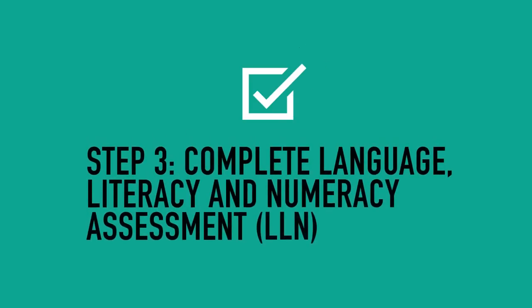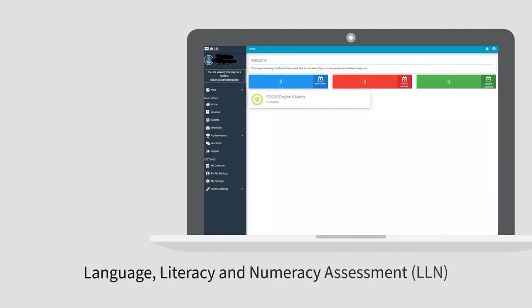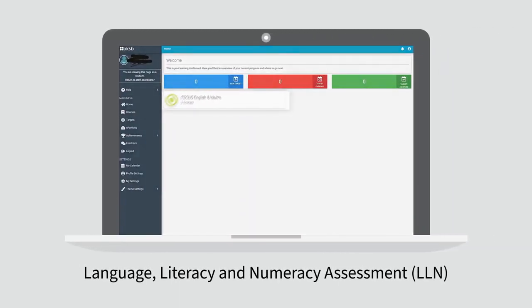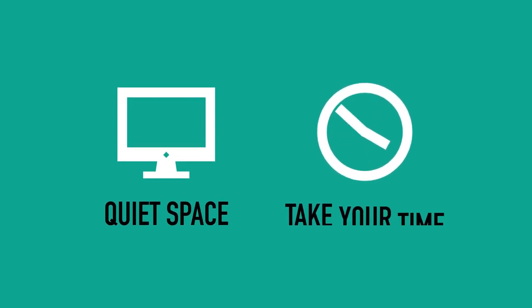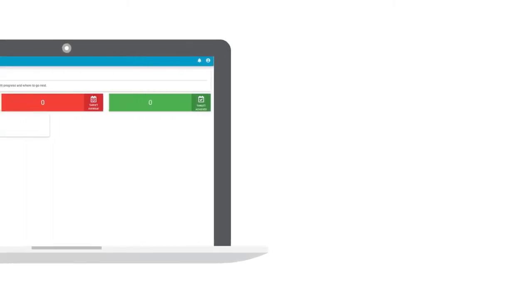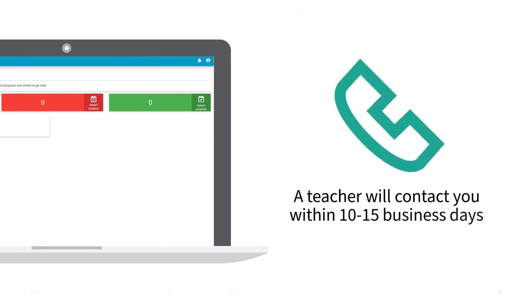Step 3: Complete language, literacy and numeracy assessment. The LLN is an online assessment that forms part of the admission criteria and helps us identify the level of support you may need. Make sure you are in a quiet space free from interruptions and take your time. Once you have completed the application and LLN, a teacher will contact you within 10 to 15 business days.